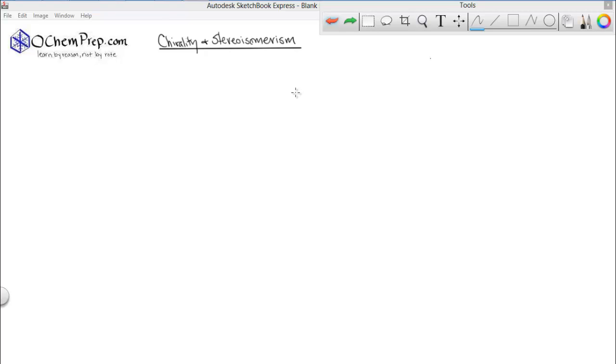In this next short podcast, we're going to talk about compounds that are called meso compounds. Meso compounds are spelled M-E-S-O.